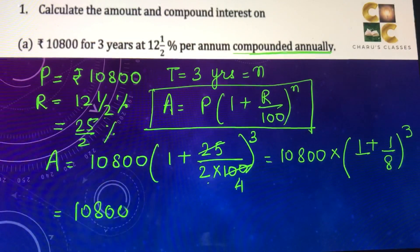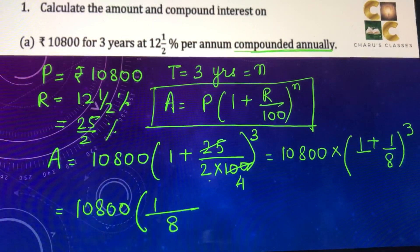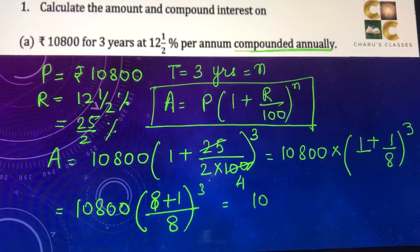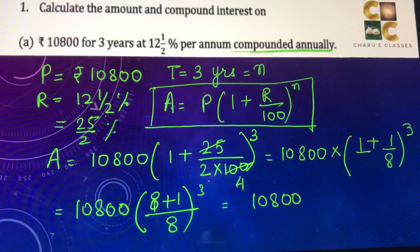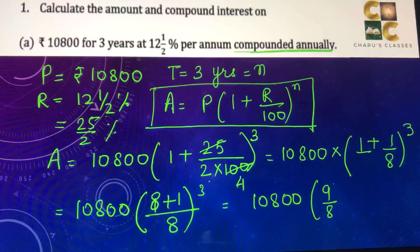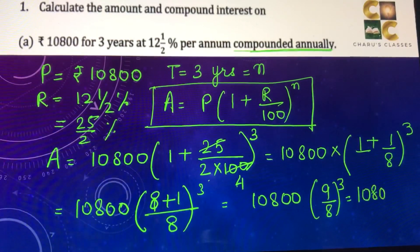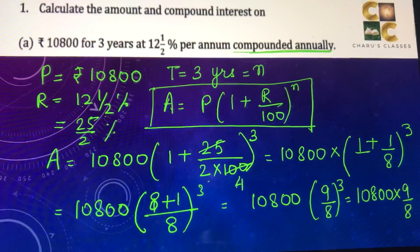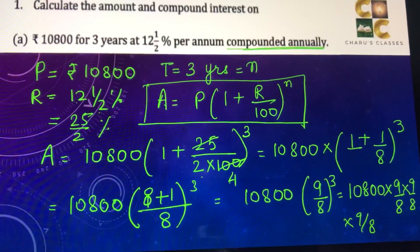Then 10,800 — here we take 8 as the common denominator — so we have (8 + 1)/8 to the power 3, that is 10,800 × (9/8) × (9/8) × (9/8).